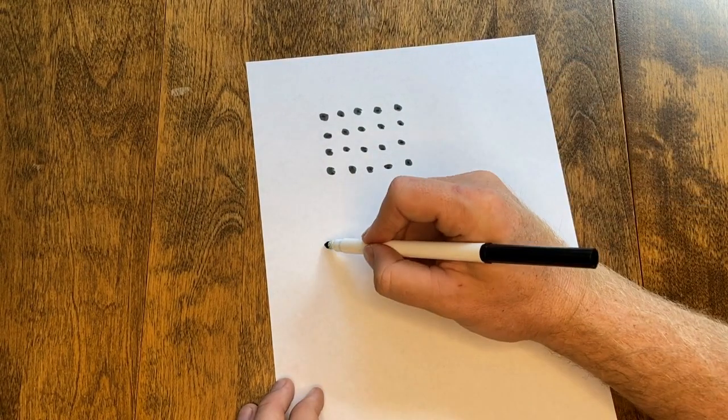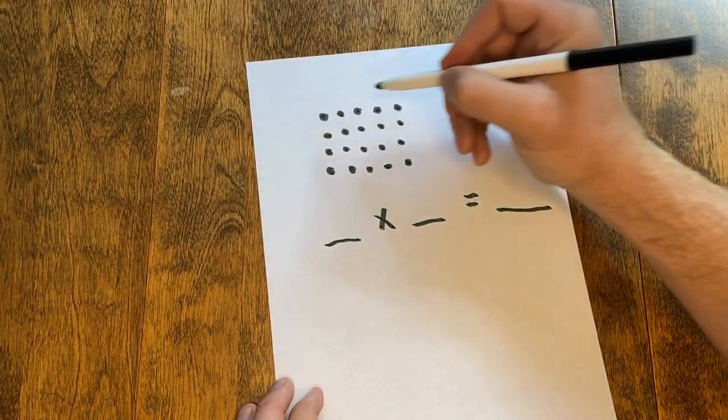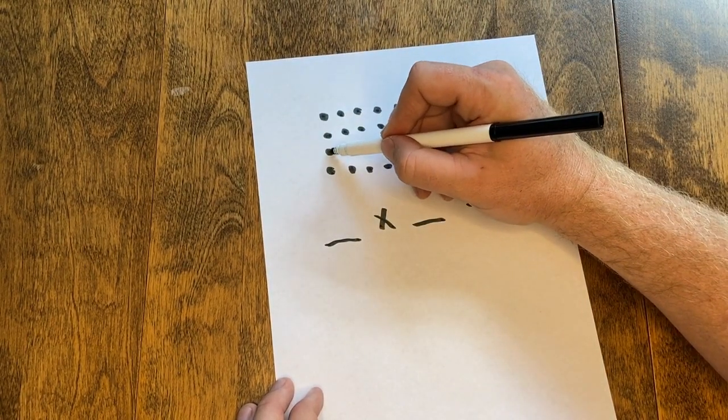So here I'm going to set up my equation. Some number of rows times some number of columns will give me my product. So I have one, two, three, four rows. That's my first factor.